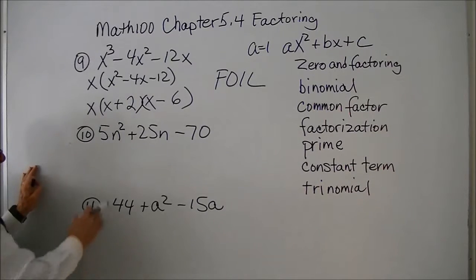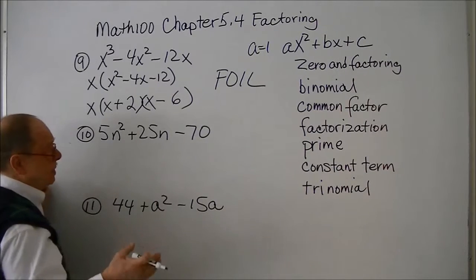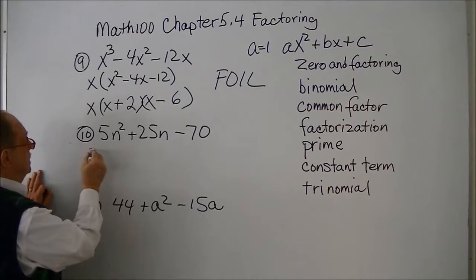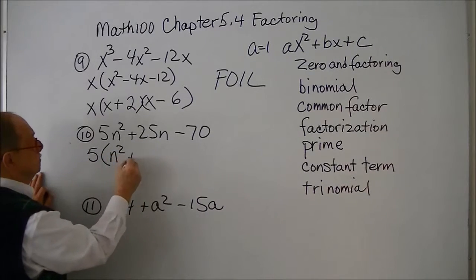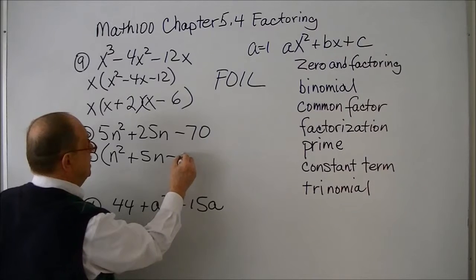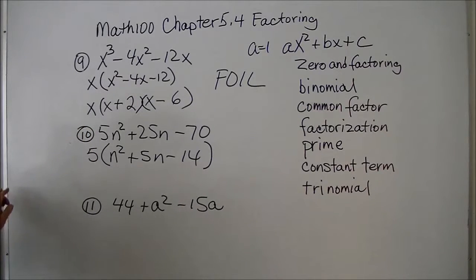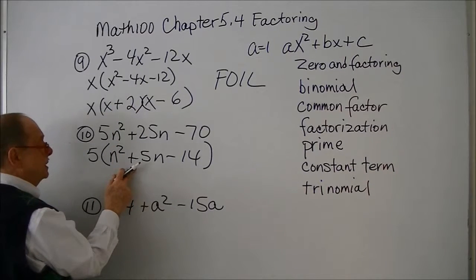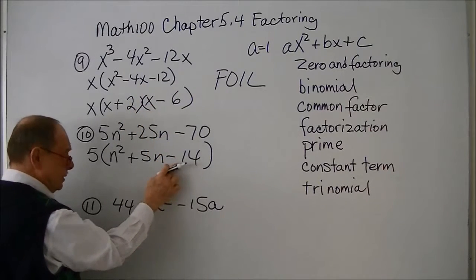Looking at example 10, it's in standard form. Is there a common factor? Yes — there's a 5. So I factor out the 5, leaving a trinomial with 14 as the constant. Notice the middle term is positive and the constant term is negative, so one factor will be positive and one negative.